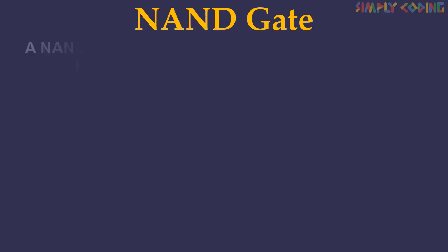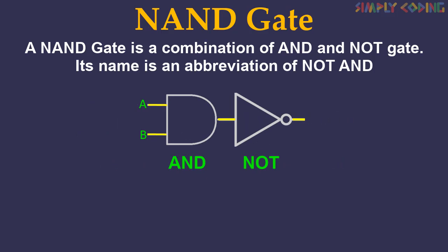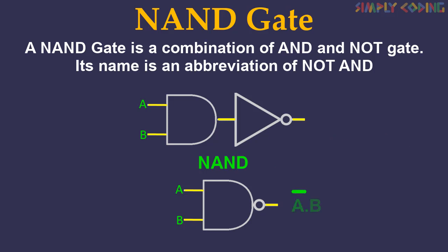Let's start with NAND gate. A NAND gate is a combination of AND and NOT gate. Its name is an abbreviation of NOT AND. In this, a NOT gate is applied on the output of an AND gate. NAND operation is shown using an AND gate with a small circle on the output. The small circle represents inversion of the AND gate. The NAND gate represents the complement of the AND operation.